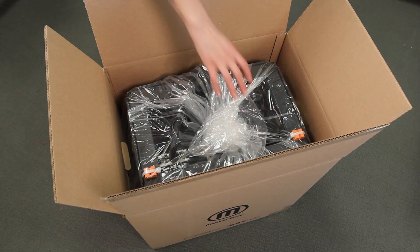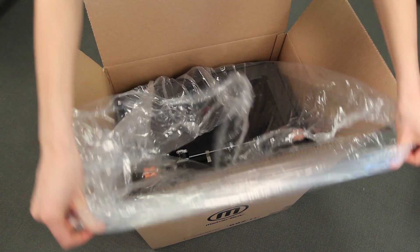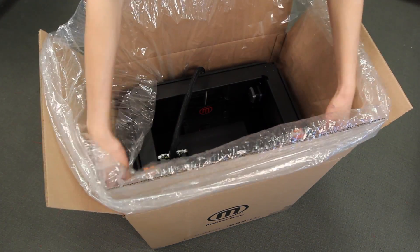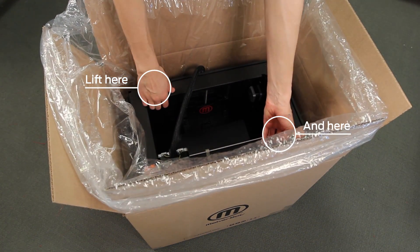Open up the plastic bag and remove the MakerBot Replicator 2X by grasping it firmly like this. Set it on a stable work surface.